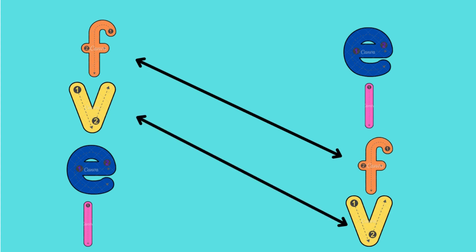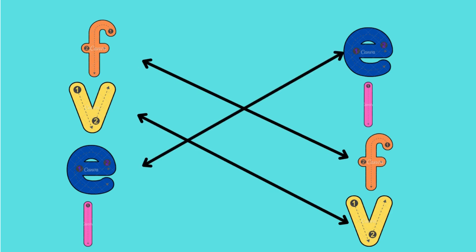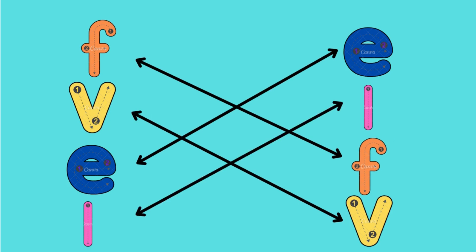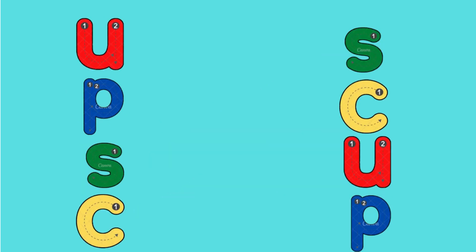Okay, where is the small e? Yes, you're right. And where is the small l? Perfect. You know all the small letters in the alphabet.